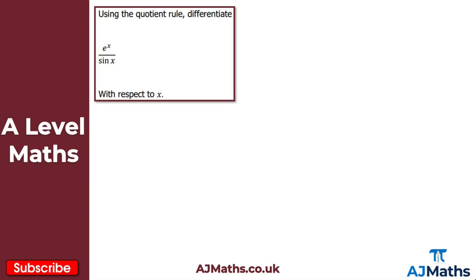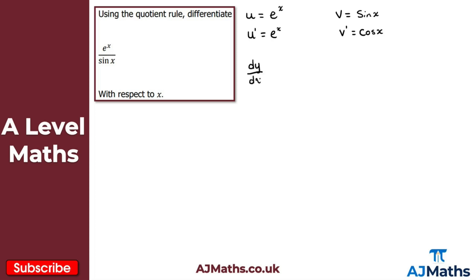For the last question, using the quotient rule differentiate e to the x over sin x with respect to x. Defining u and v: u equals e to the x (numerator) and v equals sin x (denominator). Then u prime equals e to the x, and v prime equals cos x. The quotient rule gives dy by dx equal to v times u prime minus u times v prime, all divided by v squared.